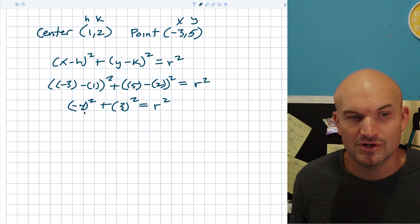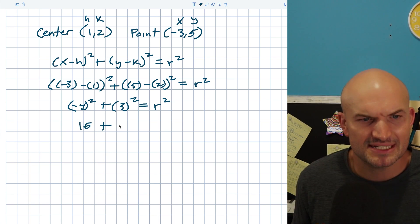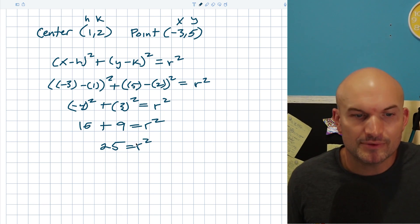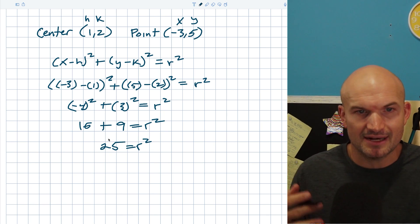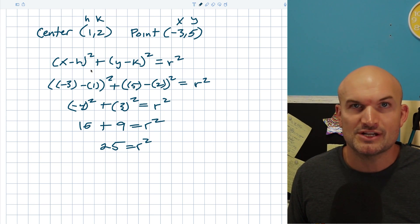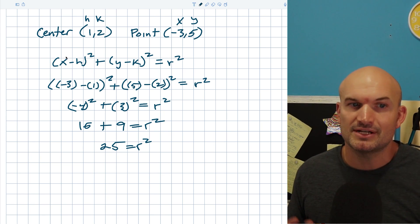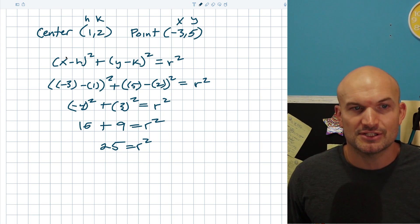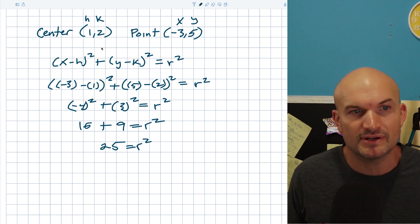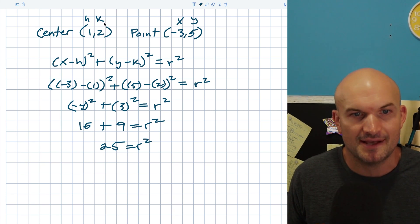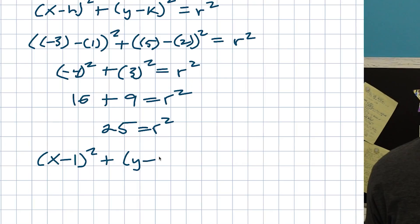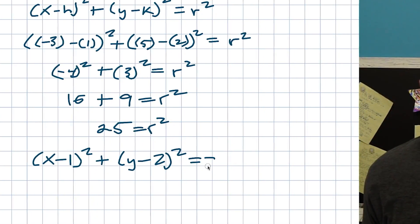So 16 + 9 = r², which gives us 25 = r². We don't need to solve for r because we just need r² to write the equation. We keep x and y since they represent all points on the circle, and we just plug in the center and r². So the final answer is (x − 1)² + (y − 2)² = 25.